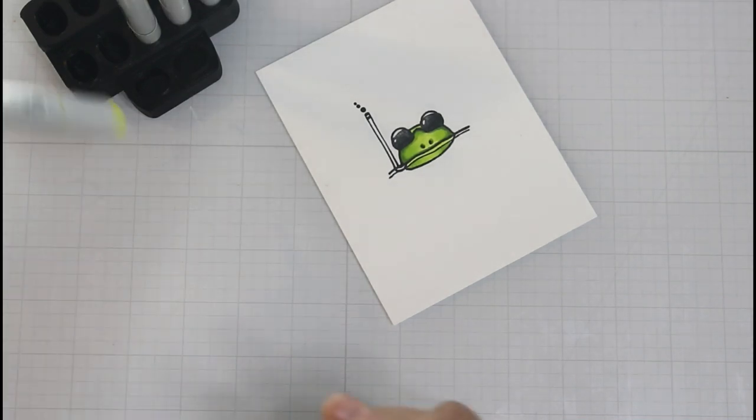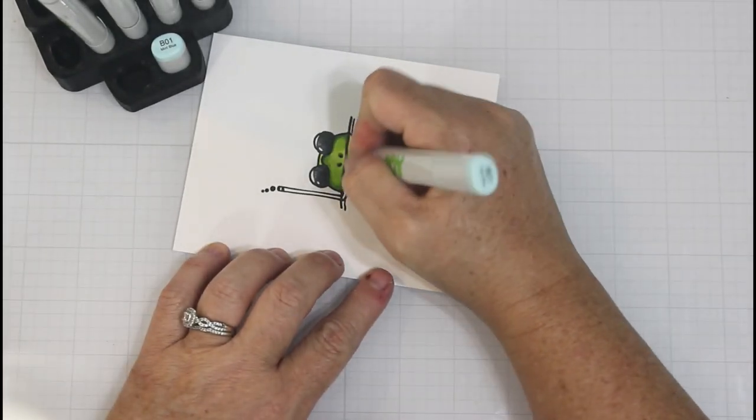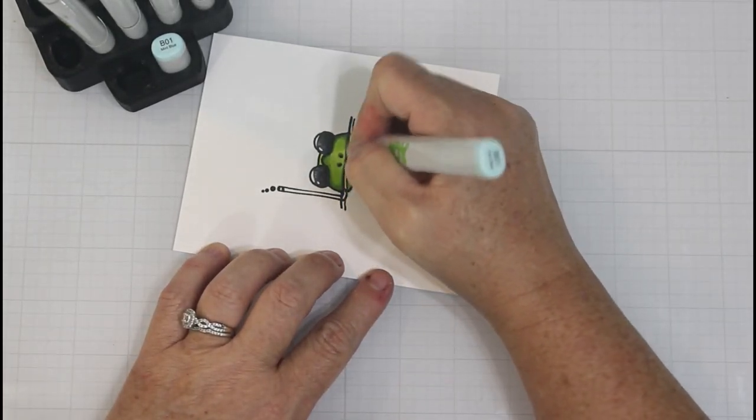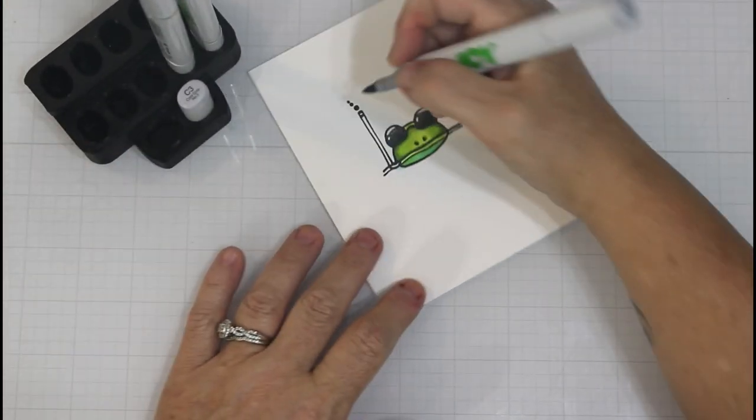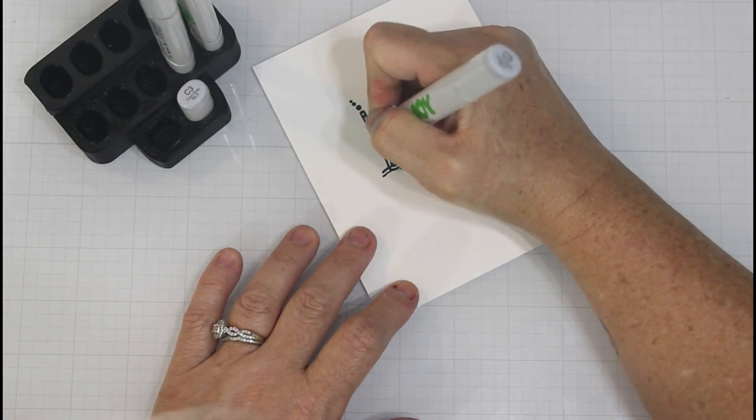But remember, he's going to be partially underwater. So I bring in my B01 and I color the bottom of his lip a little bit blue, so it gives the illusion of being underwater.